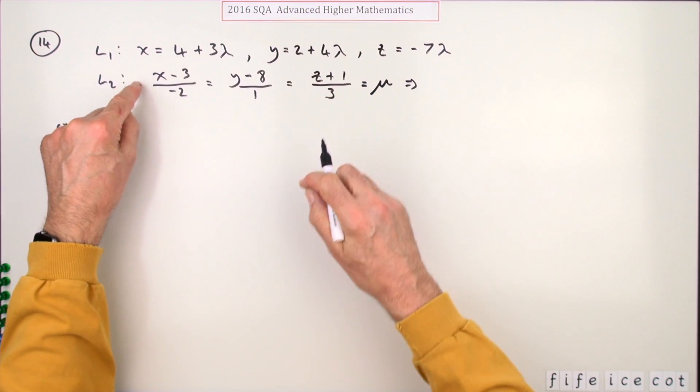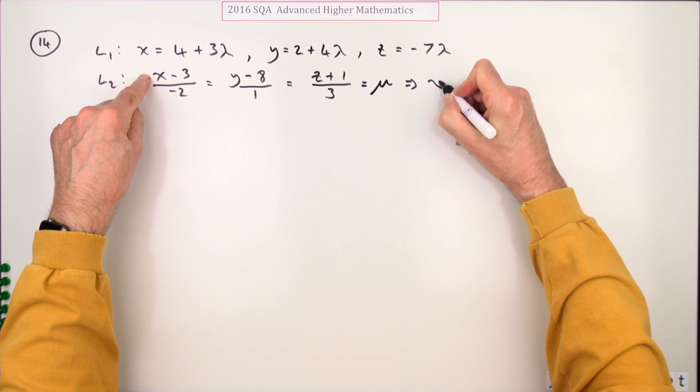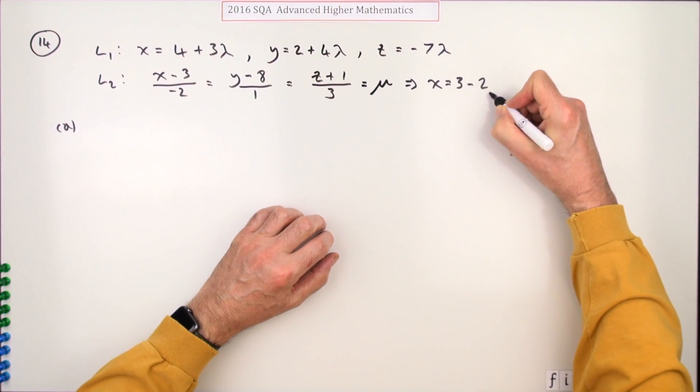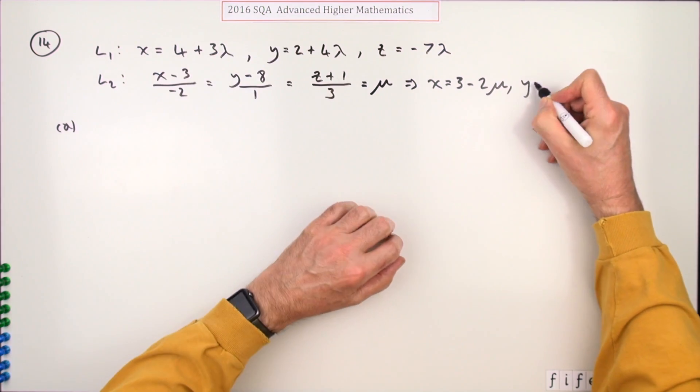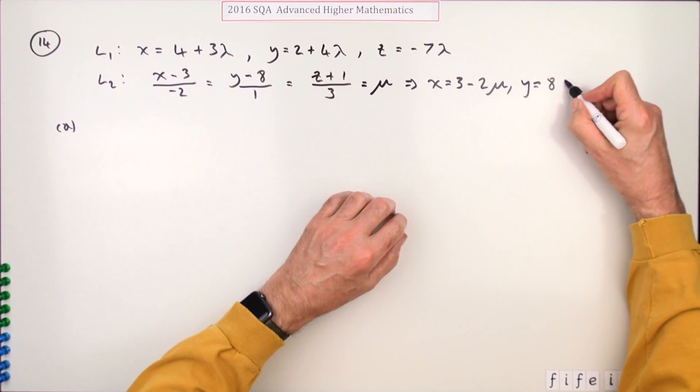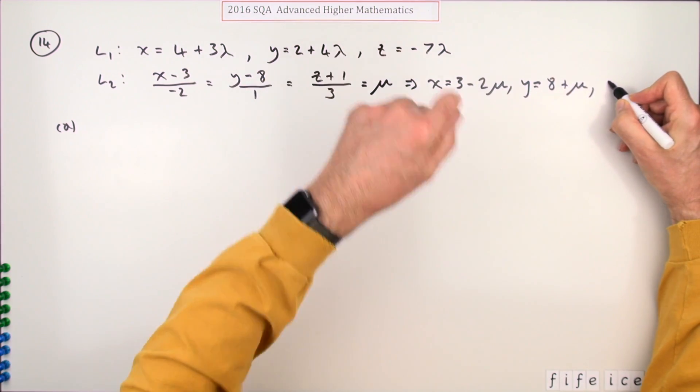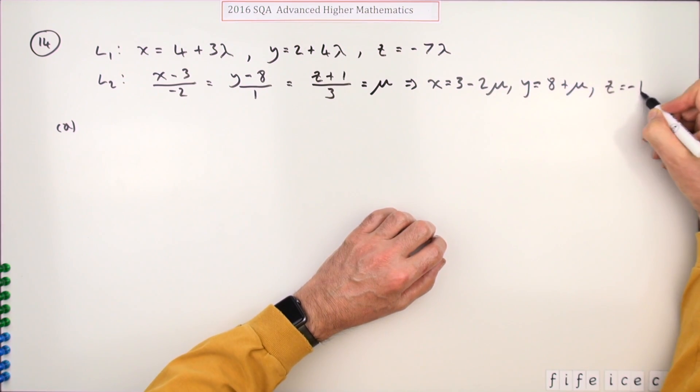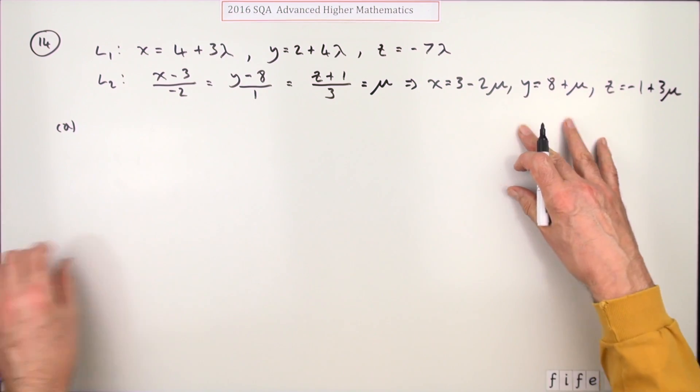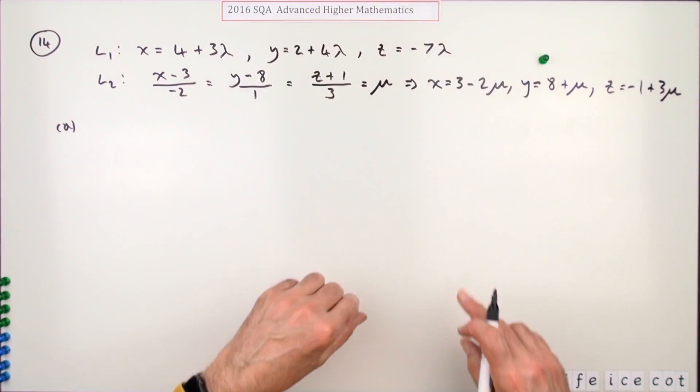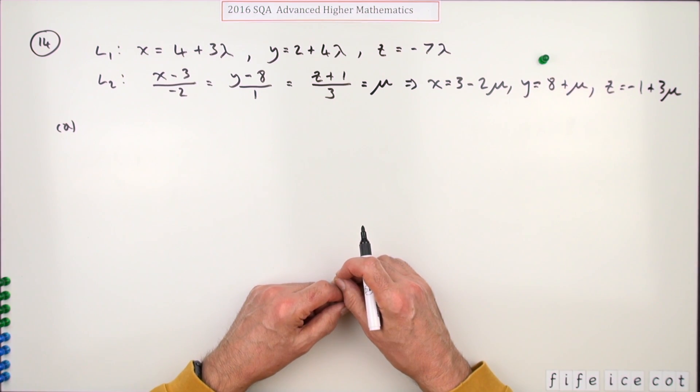x minus 3 would be negative 2 mu, so x will be 3 minus 2 mu. y will be just 1 times mu, so y equals 8 plus mu. And z here will be 3 mu minus 1, so z equals negative 1 plus 3 mu. Doing that gets you the first mark - in fact, it says doing just two of them gets you the first mark, but you need to get all three anyway to proceed.